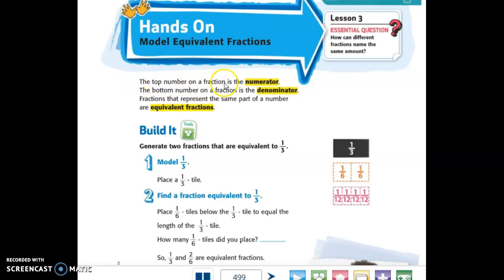The top number on a fraction is the numerator, the bottom number on a fraction is the denominator. Fractions that represent the same part of a number or a whole are equivalent fractions.